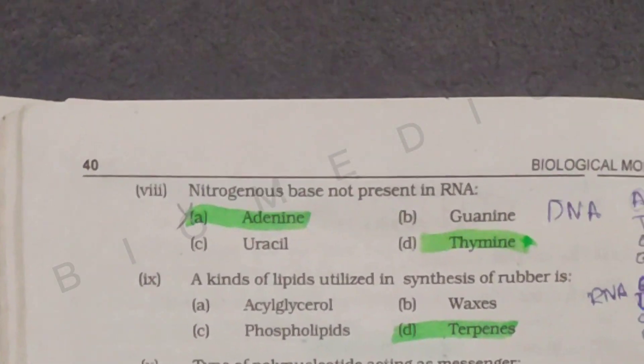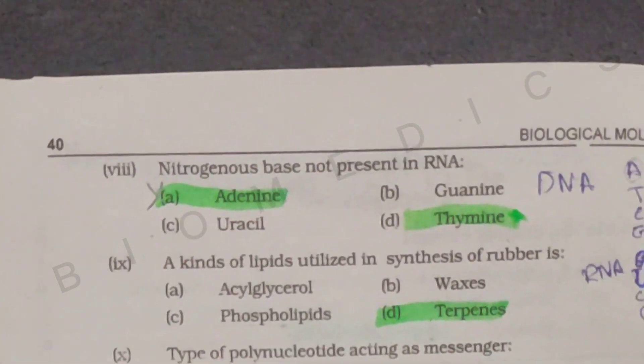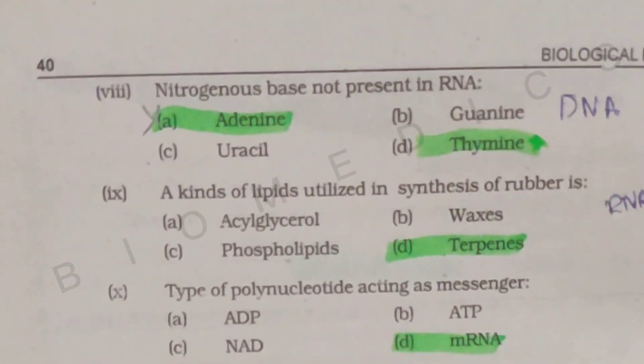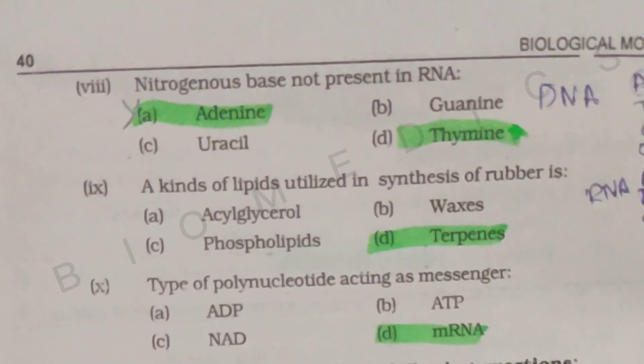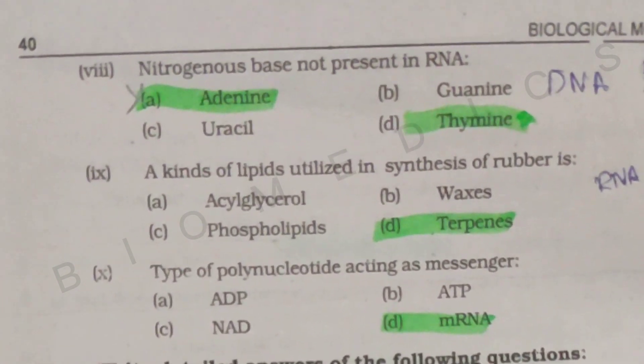Then, you have to know which kinds of lipids are utilized in synthesis of rubber. These are terpenes. These are used in the formation of rubber.